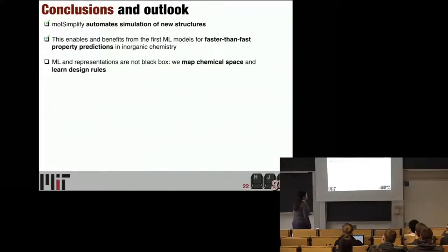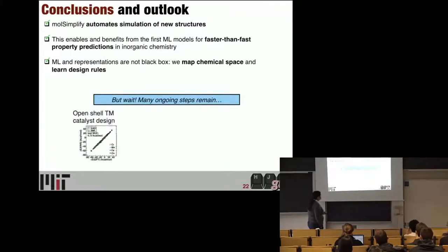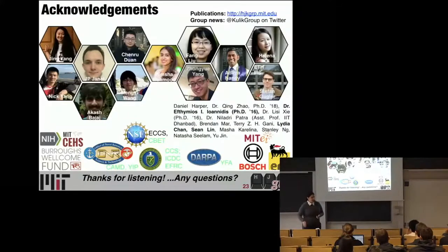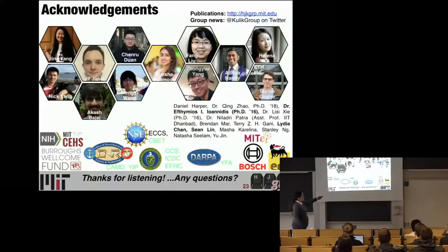Just to conclude: we've made some steps in terms of automating simulation and using ML models to make faster property predictions that we normally could with straight density functional theory, and many things still remain. I'll just finish by acknowledging the students who did the work: John Paul Jenae really started a lot of the ML work in my group — he's a senior student graduating soon, so I strongly encourage you to respond to any note from him. Chen Rujuan, Nick Yang, Aditya Nandi, and Stefan Gugler, who did a six-month master's with me, also contributed to the work. Thank you.